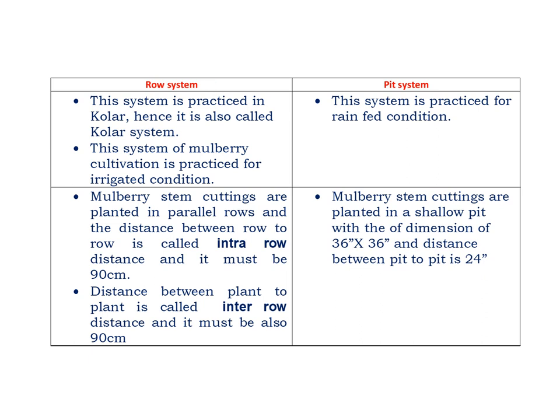The row system is practiced in Kerala, hence it is also called the Kerala system. This system is practiced for irrigated conditions. Mulberry stem cuttings are planted in parallel rows; the distance between row to row — called intra-row distance — must be 90 cm, and the distance between plant to plant — called inter-row distance — must also be 90 cm.